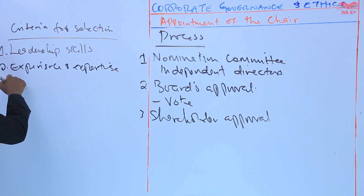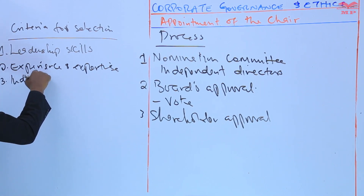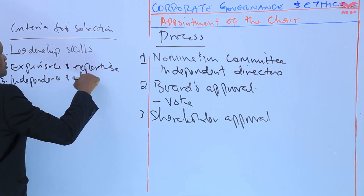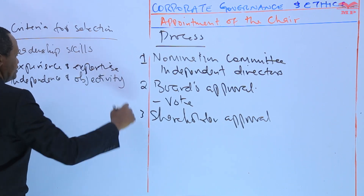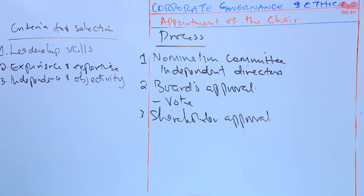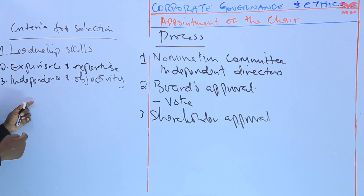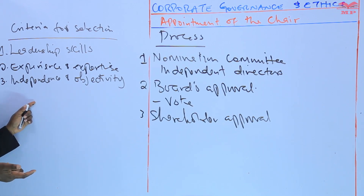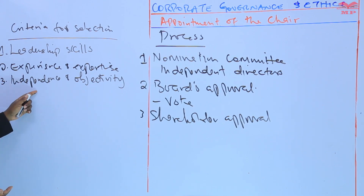Three: independence and objectivity. The chair should be independent of the company's management and independent of the company's shareholders. That is important in order to ensure unbiased decision-making. The chair must be independent and objective.